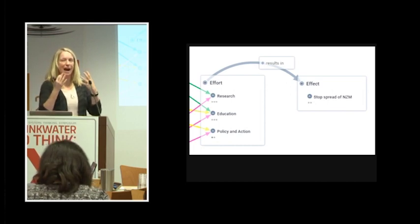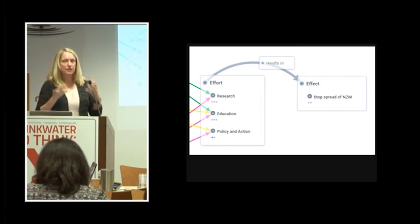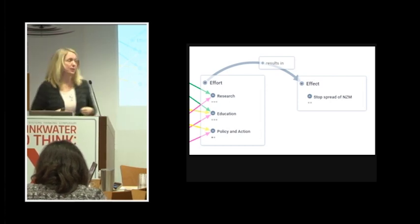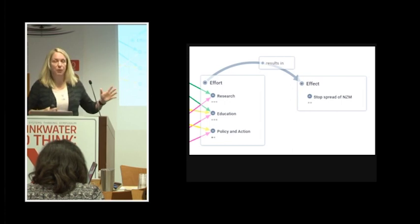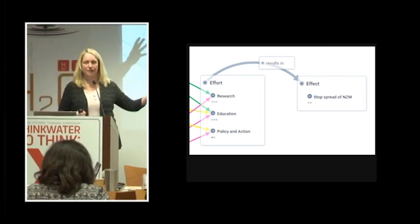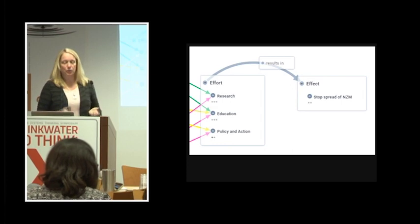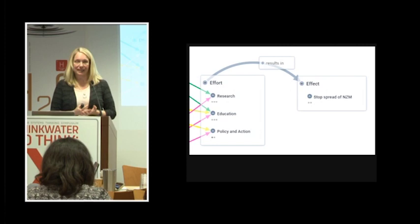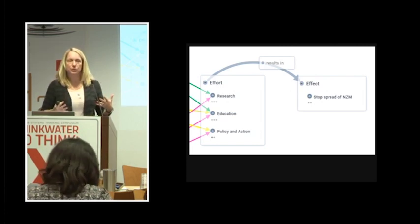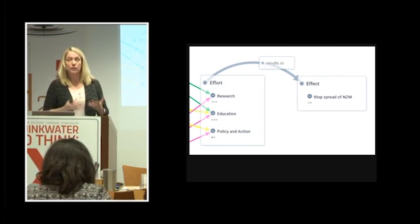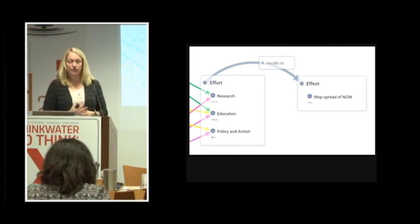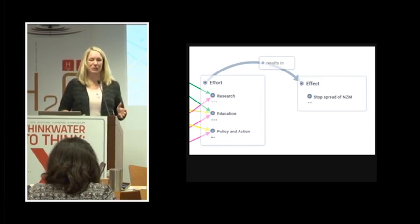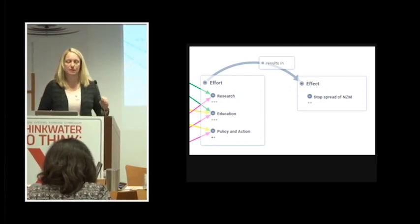And so, one thing we have to keep in mind as we're thinking about all of these different players, and we could go into this further, like those businesses that depend on healthy rivers, is what we're really looking for. Basically, we want to put in some effort that results in a desired effect. So, the effort could include research. We don't know much about New Zealand mud snails, honestly. Education. Getting information out to river users and managers about what does work to stop these invaders. And then, finally, policy and action. And the desired end result is we're stopping the spread of New Zealand mud snails. So, that's what we're looking for through the systems thinking approach.